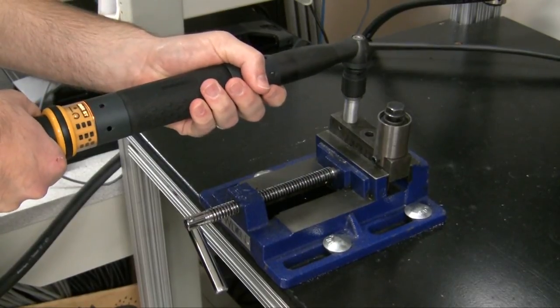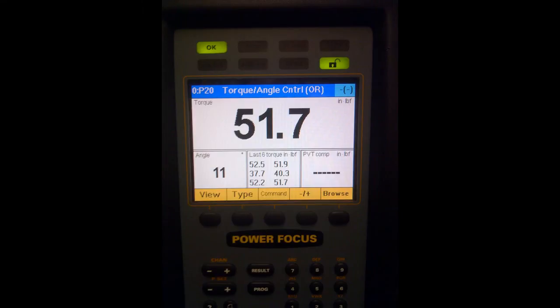When running the hard joint, the tool is shut off based on torque. Note the low final angle.